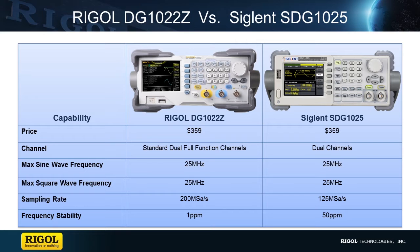Both of these waveform generators cost $359. Both are dual channel waveform generators that produce 25 megahertz sine wave and square wave functions. The DG1022Z can produce higher frequencies than the SDG1025 for every other waveform function apart from the sine wave and square wave.